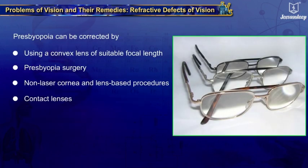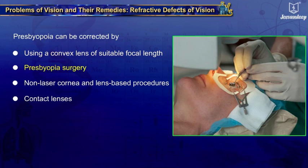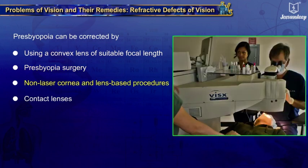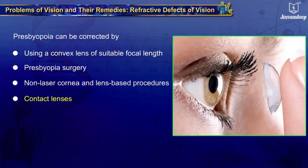Presbyopia can be corrected by using a convex lens of suitable focal length, laser presbyopia surgery, and non-laser cornea and lens-based procedures. Contact lenses have also been found to be useful in the treatment of presbyopia.